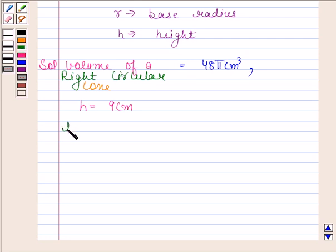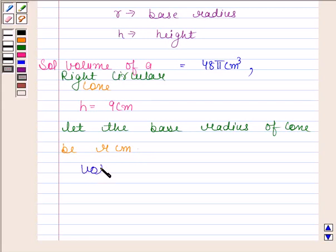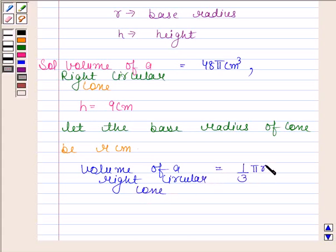Let the base radius of cone be r cm. Now, volume of a right circular cone is equal to 1/3 πr²h.